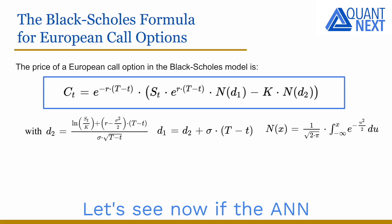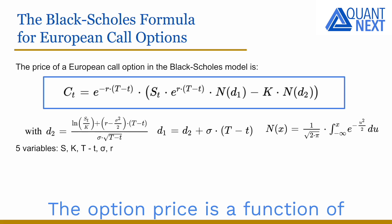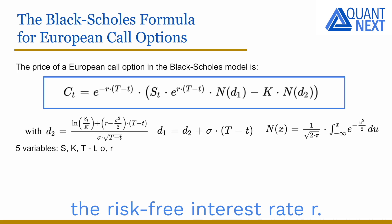Let's see now if the artificial neural network works well to estimate the Black-Scholes formula. We know the price of a European call option in the Black-Scholes model is given by the following closed-form solution. The option price is a function of 5 variables: the asset price S, the strike price K, the time to maturity T minus t, the volatility sigma, and the risk-free interest rate.